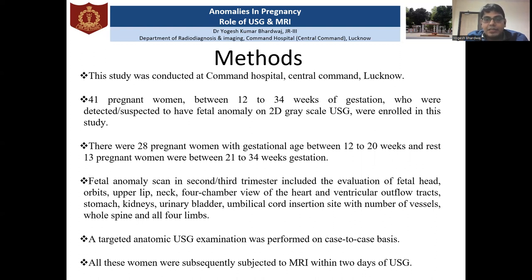Out of these 41 pregnant females, 28 were between 12 to 20 weeks of gestational age and the rest were between 21 to 34 weeks. The fetal anomaly scan in the second or third trimester was done to visualize the fetal head, orbits, lip, neck, cardiac structures, genitourinary tract, umbilical cord, spine, and all four limbs. Targeted ultrasound was also done on a case-to-case basis.